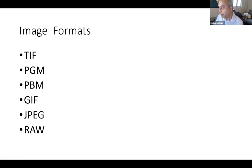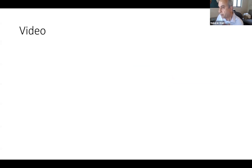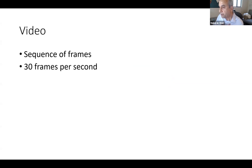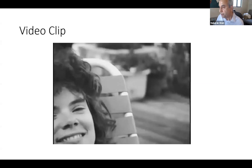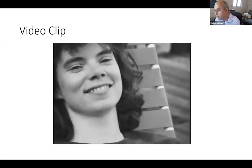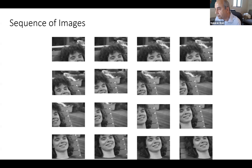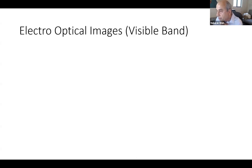There are different forms of images — you must be familiar with JPEG and TIFF. Video is a sequence of images; you typically have 30 frames or 30 images in a second. There are different formats: AVI, MPEG, and so on. A video clip might have 16 frames — 16 images.